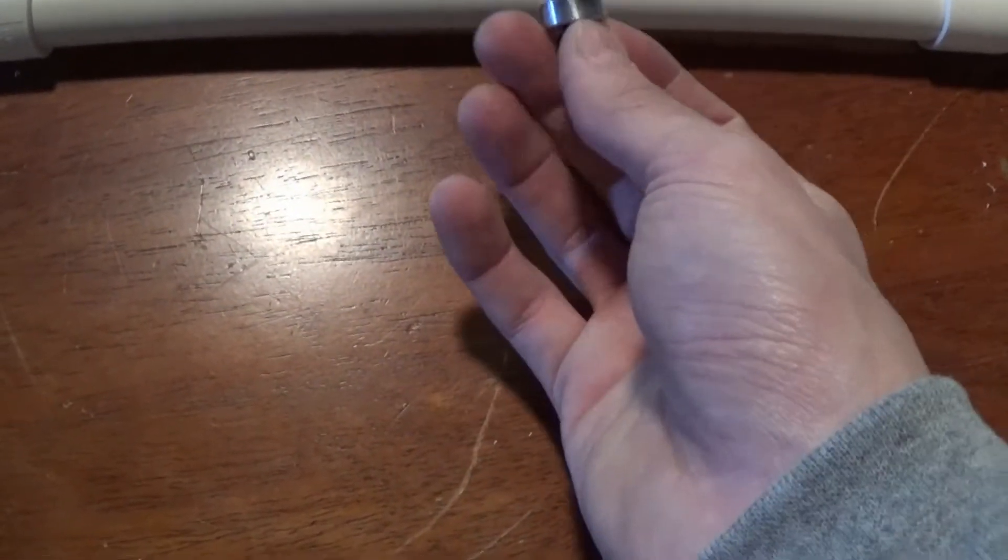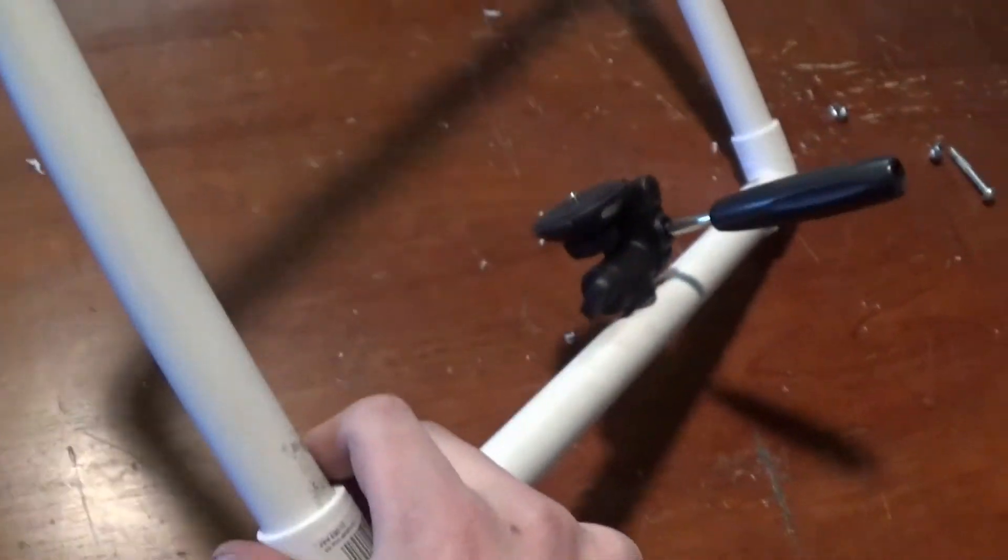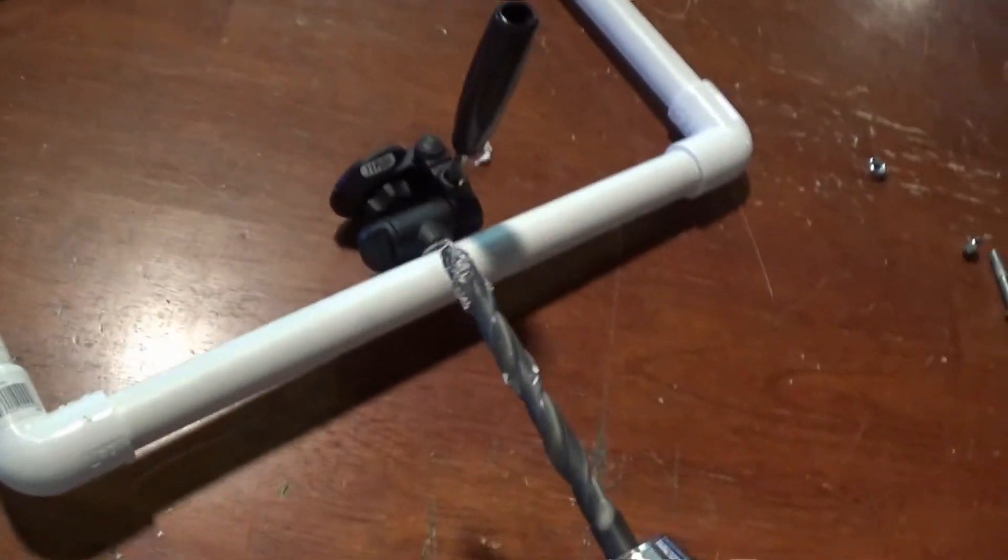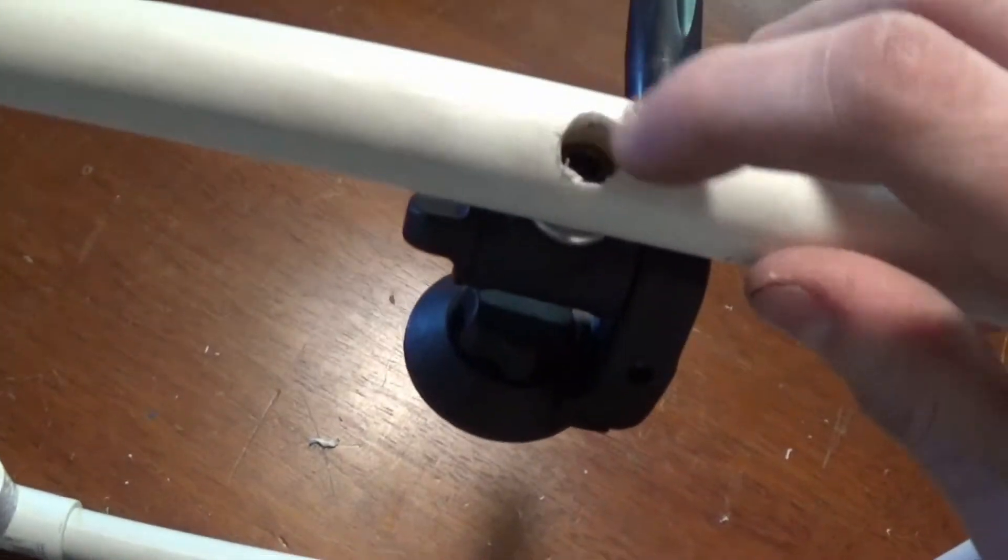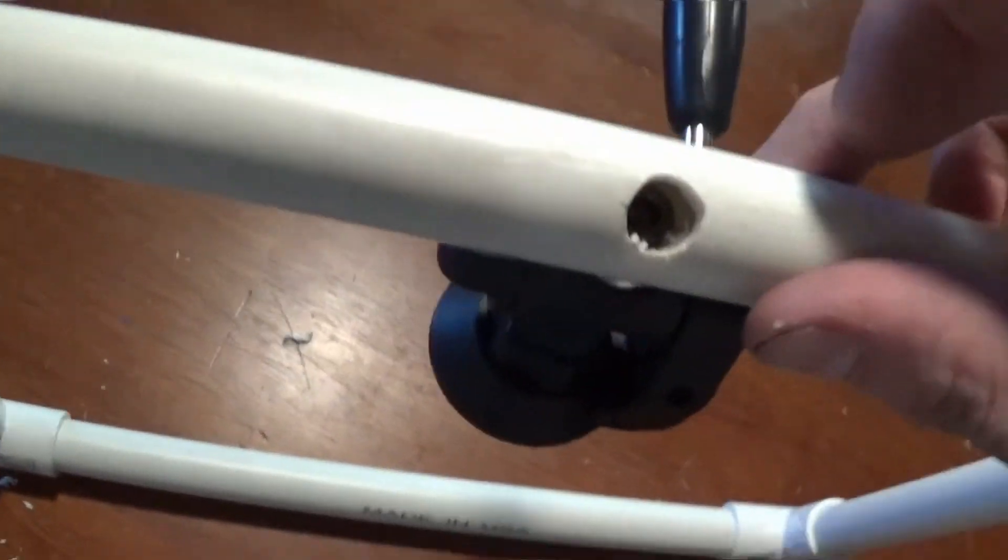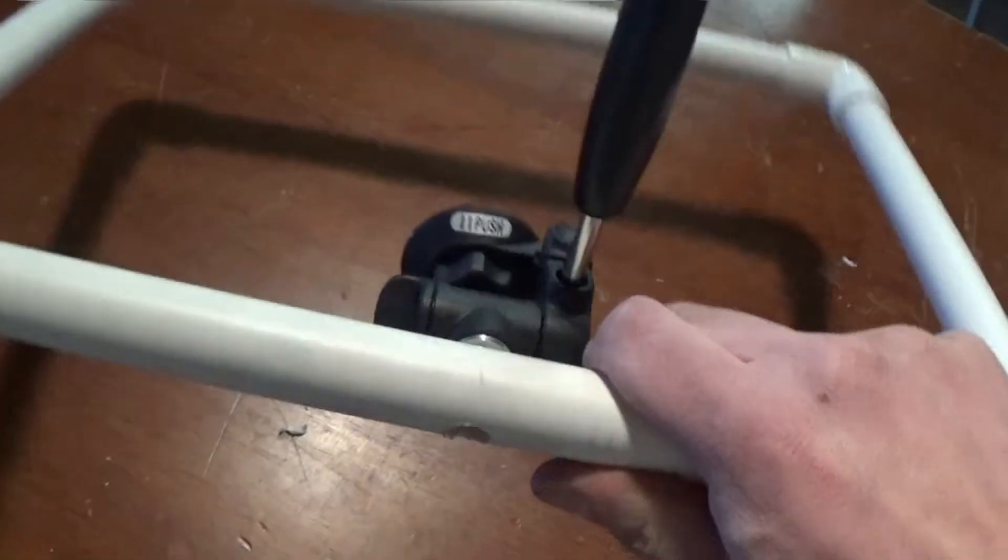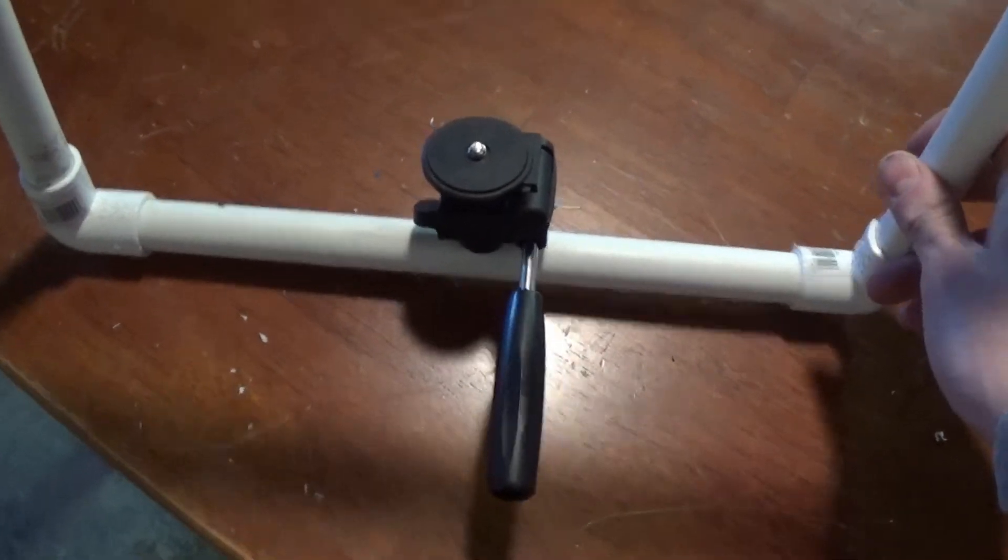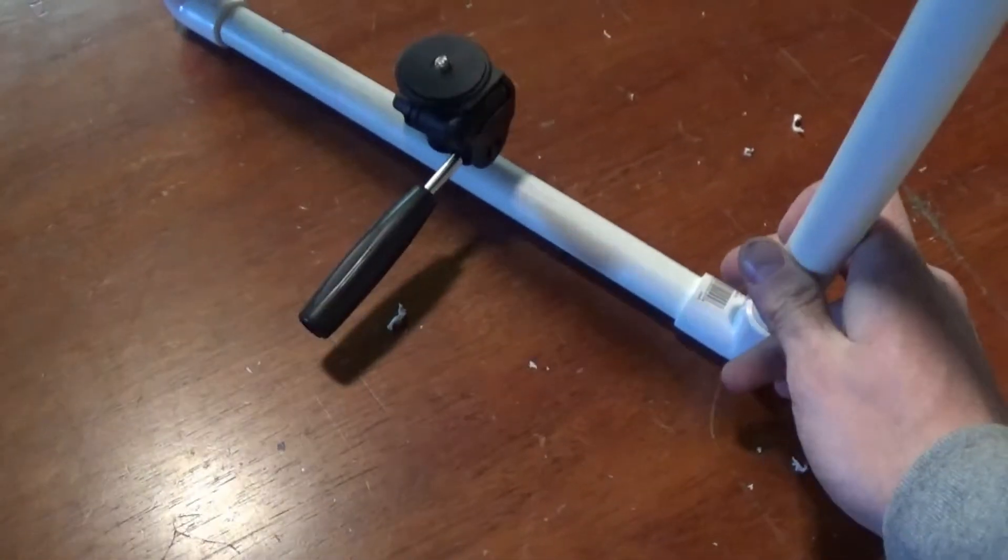Alright guys, and there we have it. I found a bit that was approximately the same size as that allen key head. As you can see, I messed up pretty bad - the hole is not centered - but I was able to get it in there and get it tightened down. There we go, there's the new head and that's going to work actually perfectly.